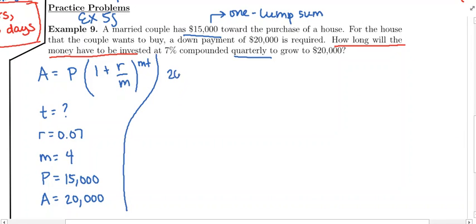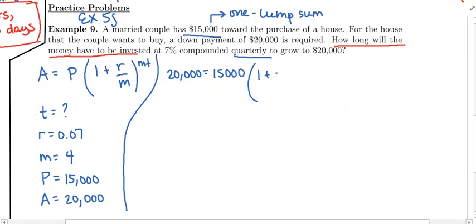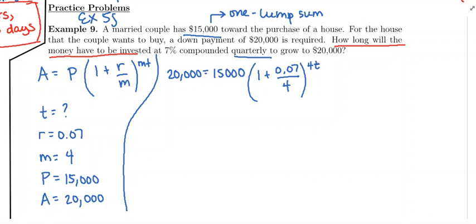Let's set it up. We're going to get twenty thousand is equal to fifteen thousand times one plus point zero seven divided by four, raised to the four times T. We need to solve for T — T is trapped in the exponent.